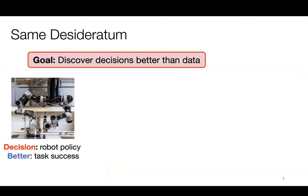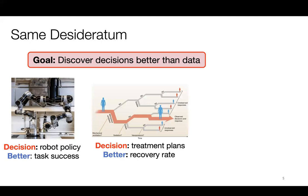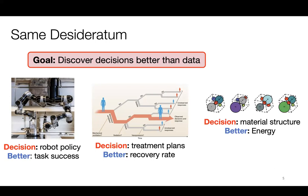This goal of discovering decisions that are better than the data comes up in many other domains. In robotics, we want to discover robot policies that solve a task better than any policy known so far. In healthcare, we want to discover treatment plans that induce much better recovery rates than anything a doctor has prescribed before. In scientific discovery, we want to discover materials and molecules with appealing properties not seen in any existing dataset. In all these cases, we want to go beyond the data, and supervised and unsupervised learning are not quite enough.